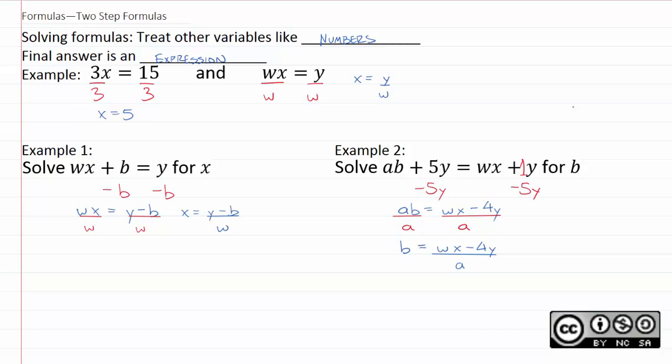Now, if you had to type these into WAMAP, you have to be careful to put the top and the bottom in parentheses if they have multiple terms. If you were to type this into WAMAP, example 1 would come out to y minus b over w.